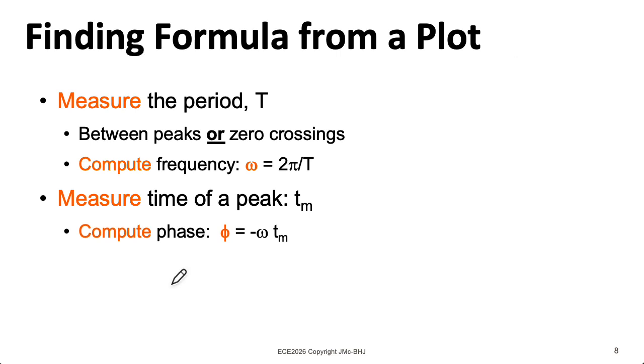Usually what you want to do is you want to add or subtract multiples of 2π as needed in order to get phi to be between minus π and π. That's a convention we like to use. Now, the easiest part is you just measure the height of the wave, and that gives you your amplitude A.